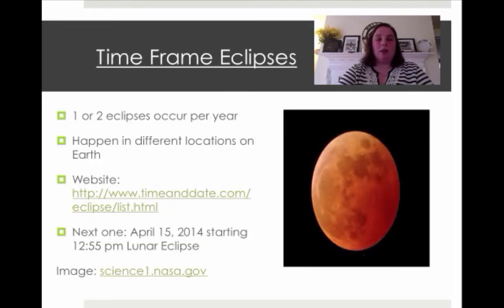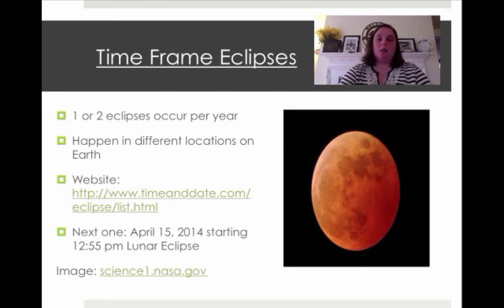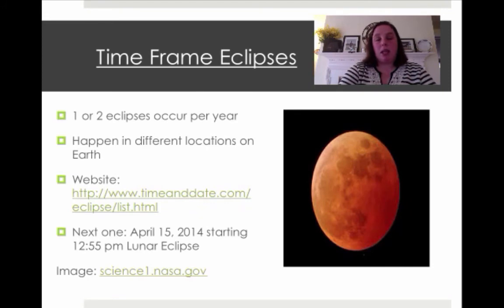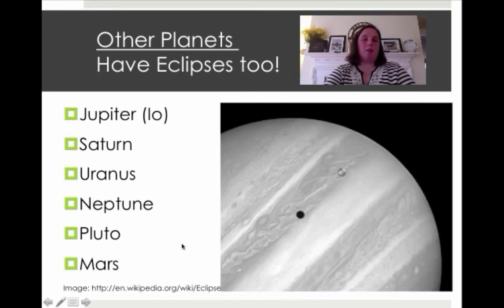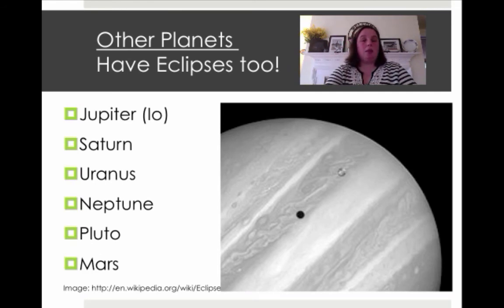Let's talk about the time frame of eclipses. You get one or two eclipses per year, and they happen in different locations. There's a website that will show you the time and date of certain eclipses. The next one is going to be April 15th this year at 12:55 — it's going to be a lunar eclipse. Just as the Earth and the moon have eclipses, it makes sense that other planets would have eclipses too.